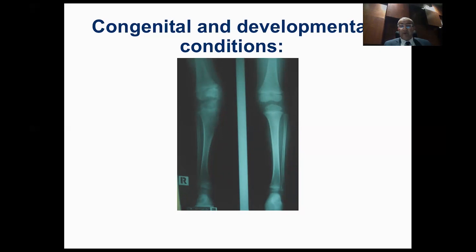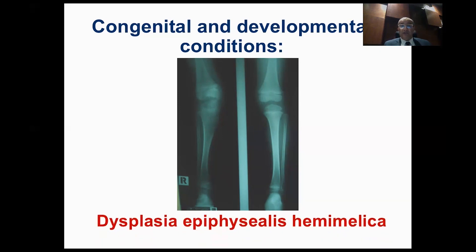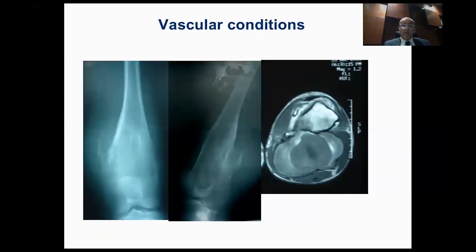It looks like an exostosis or osteochondroma of an epiphyseal location, which is very rare. This actually turned out to be dysplasia epiphysealis hemamelica — a congenital disorder that mimics bone tumor. The child presents with a swelling, but it is not due to a tumor; it's due to a developmental condition.